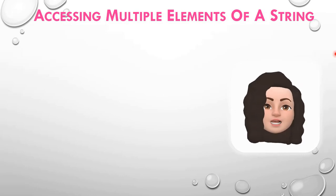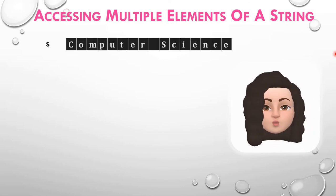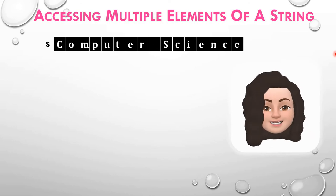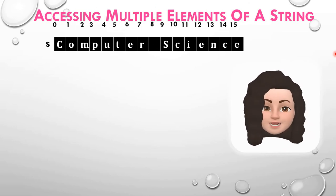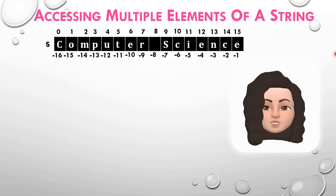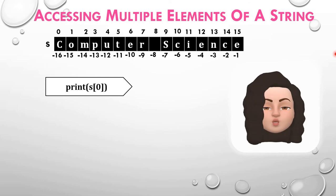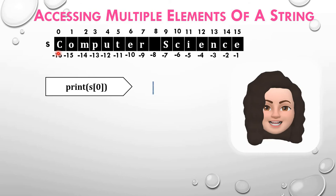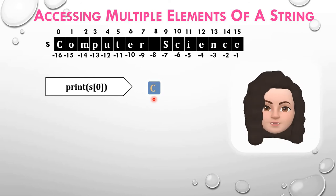How to access more than one character of a string? That is also using indexing. For example, s is equal to 'computer science'. Forward indexing goes from 0 to 15, and backward indexing from minus 1 to minus 16. The statement print(s[0]) gives 'c' — the character at index 0. The statement print(s[1:4]) — the starting index is 1 and ending index is 4, which will not be included, so the output is 'omp'.